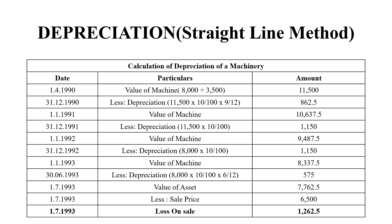Again, we have to calculate the depreciation value. Depreciation is on the original cost method. So the actual asset value is Rs. 11,500.00, and 10% depreciation gives Rs. 1,150. We need to get Rs. 9,487.50 as the value on 1st January 1992. Again, we calculate depreciation for 1 full year: 11,500 × 10 ÷ 100 = Rs. 1,150.